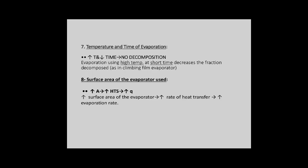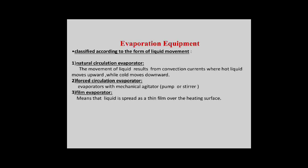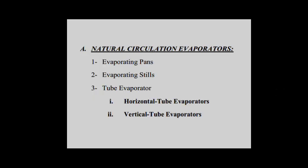Number seven: surface area. Increased surface area increases the rate of heat transfer and increases evaporation rate. Evaporation equipment may be classified according to the form of liquid movement: number one, natural circulation evaporators; number two, forced circulation evaporators; or film evaporators. Natural circulation evaporators include the evaporating band, evaporating still, and tube evaporators — either horizontal or vertical.